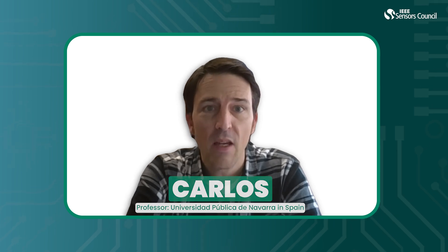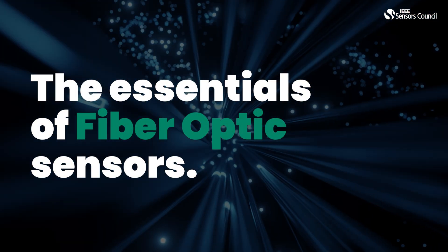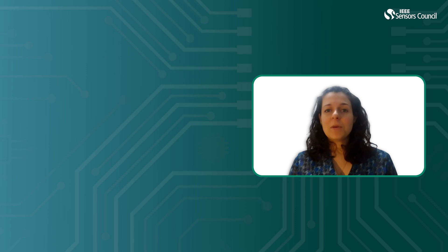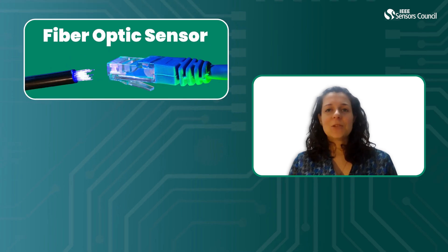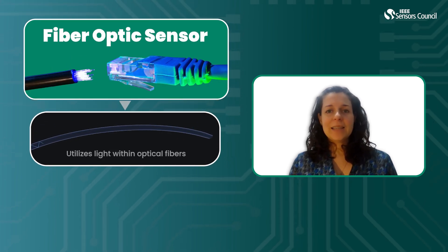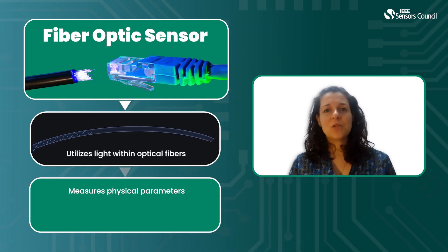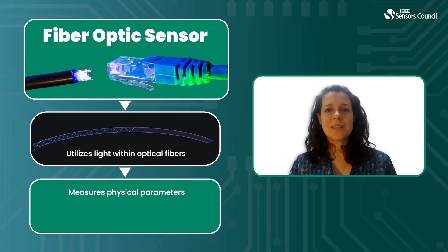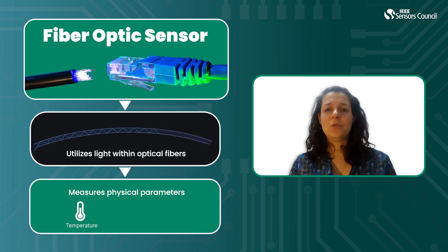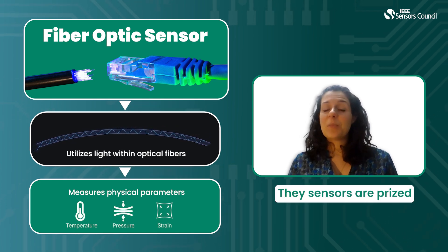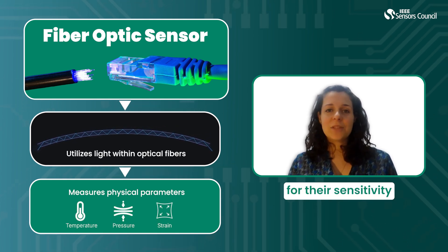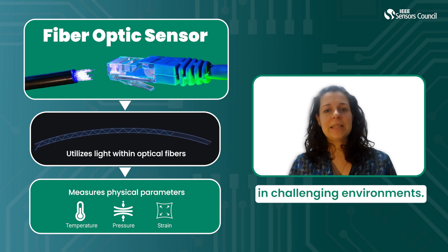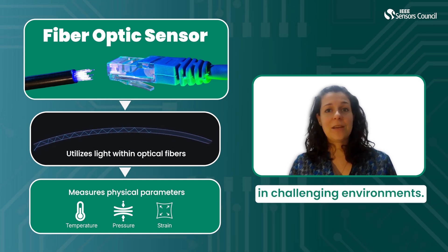Today we will explore the essentials of fiber optic sensors. Fiber optic sensors utilize light within optical fibers to measure physical parameters like temperature, pressure and strain. They are prized for their sensitivity and resilience in challenging environments.